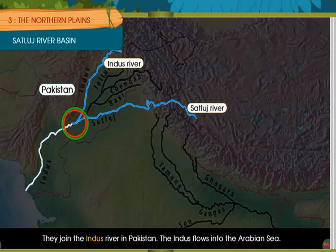The Bhakra Dam was built on the Satluj river, which produces electricity for Punjab and Haryana. The Indira Gandhi Canal also takes water from the Satluj river.